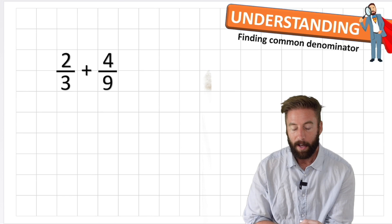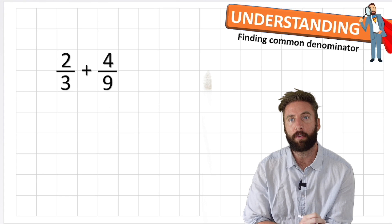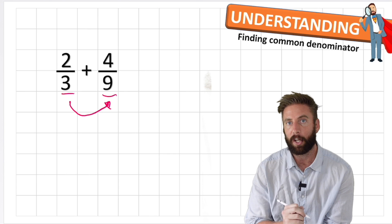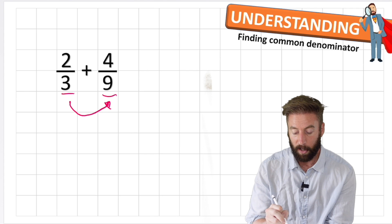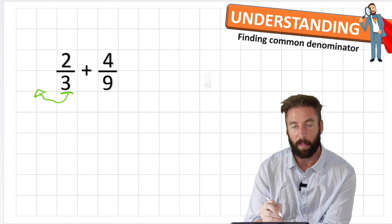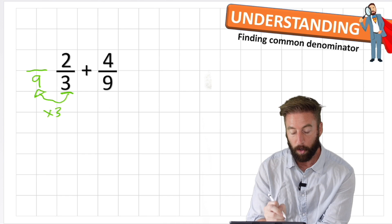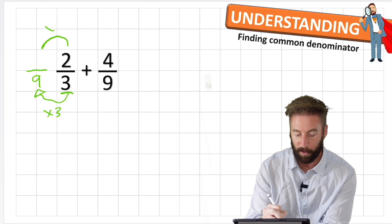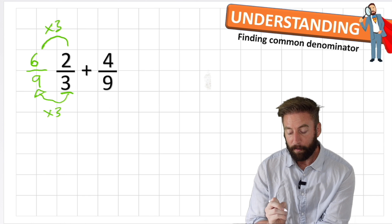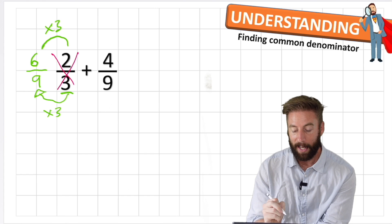Question one: 2 thirds plus 4 ninths. Some of you can see a relationship straight away - 9 is in the 3 times table. So I can use that knowledge to find an equivalent fraction. I'm going to take this fraction and turn it into a fraction with 9 as a denominator. How do I turn 3 into 9? I have to times by 3. That turns my denominator into 9. Now if I've done that to my denominator, I also need to do it to my numerator. 2 times 3 is 6 - my equivalent fraction is 6 ninths.